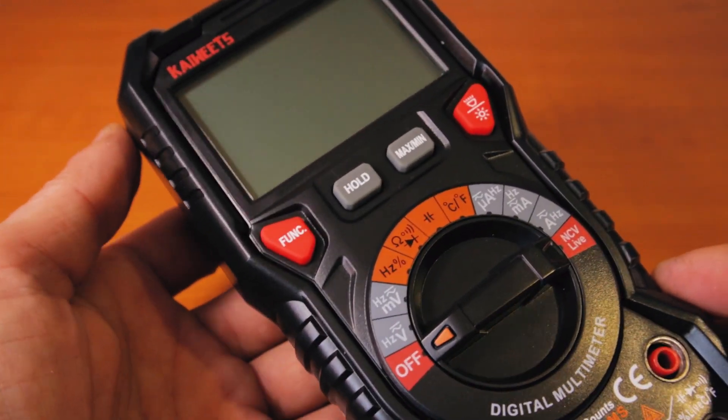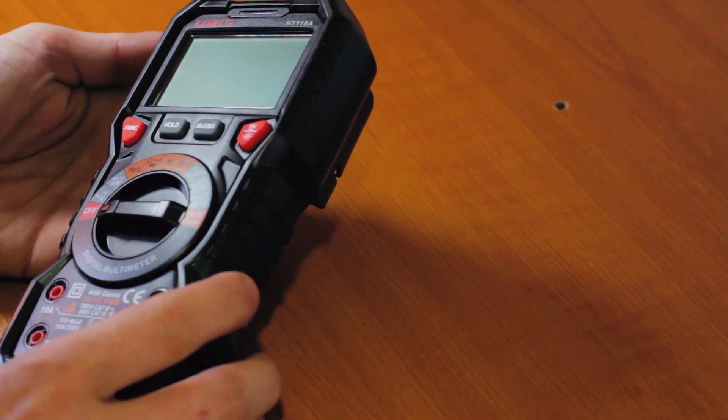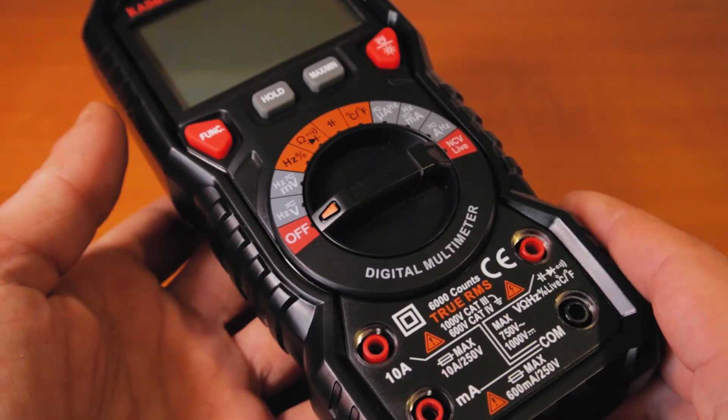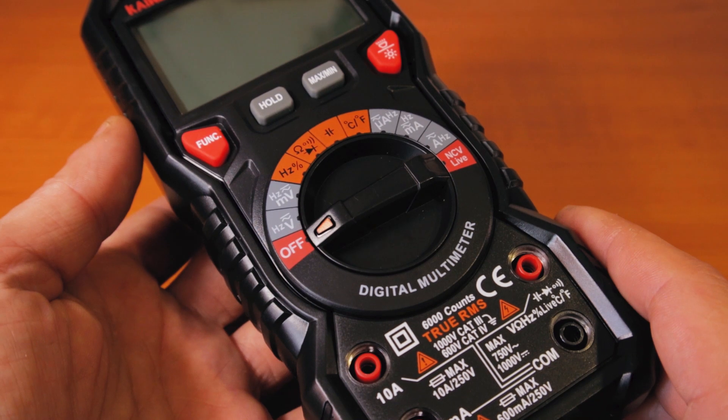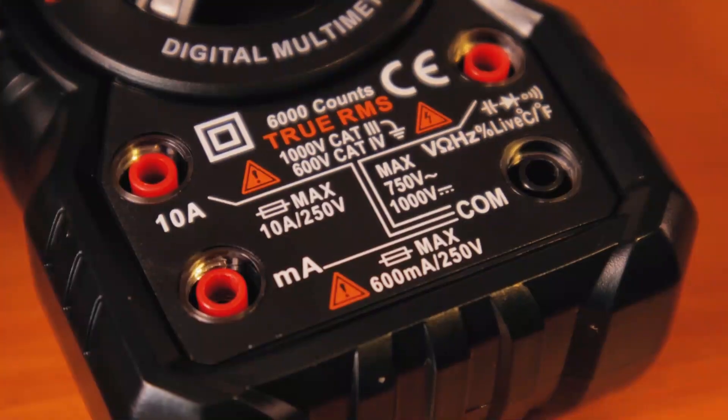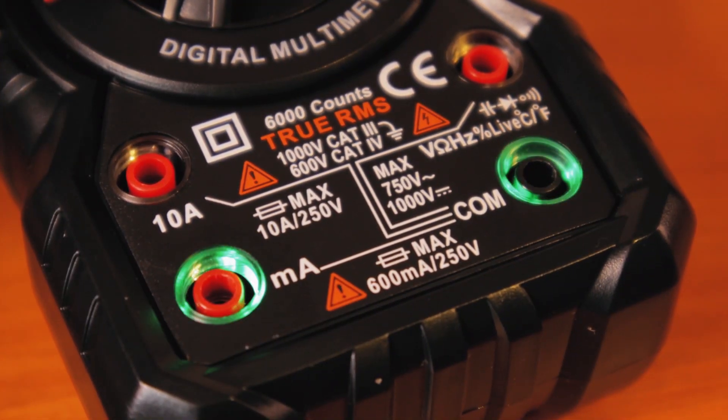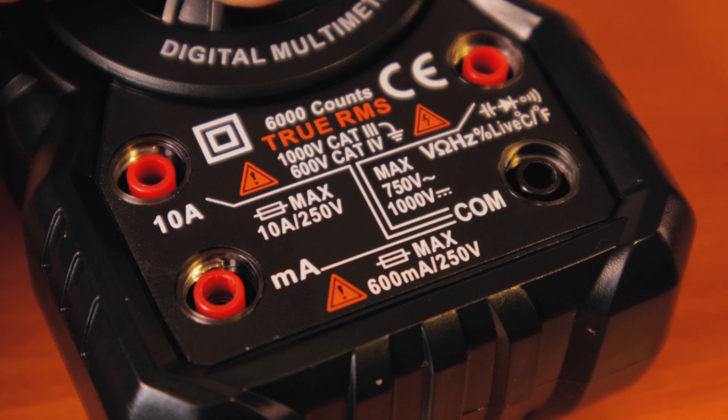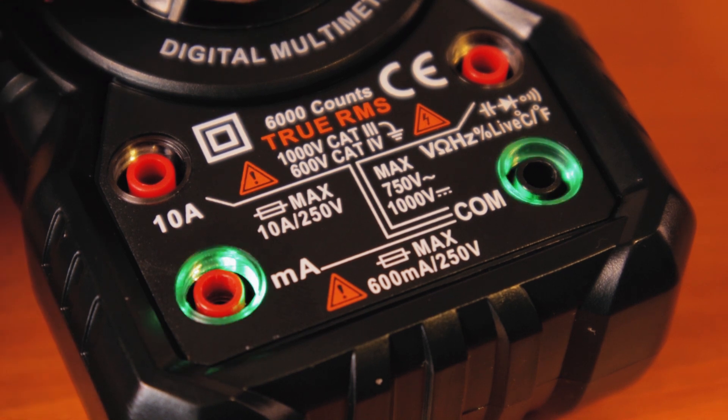I had it on one of my smaller multimeters but the multimeter was so light that it was always falling down. One thing that I liked about this multimeter is the function for beginners. Depending on what you're measuring, it's going to show you where you have to put the probes.